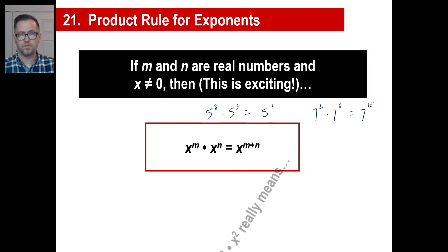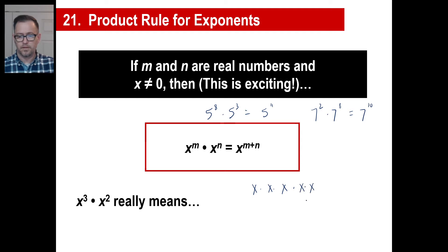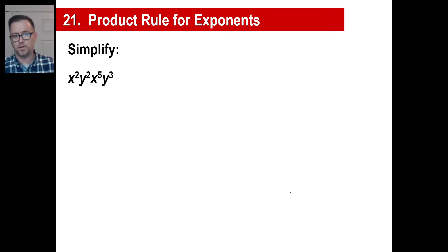Okay, let's revisit what this really meant. x to the 3rd times x to the 2nd: there's x to the 3rd, there's x to the 2nd, and it's x to the 5th. That's the reason why it's x to the 5th — you just add them together. So it works.